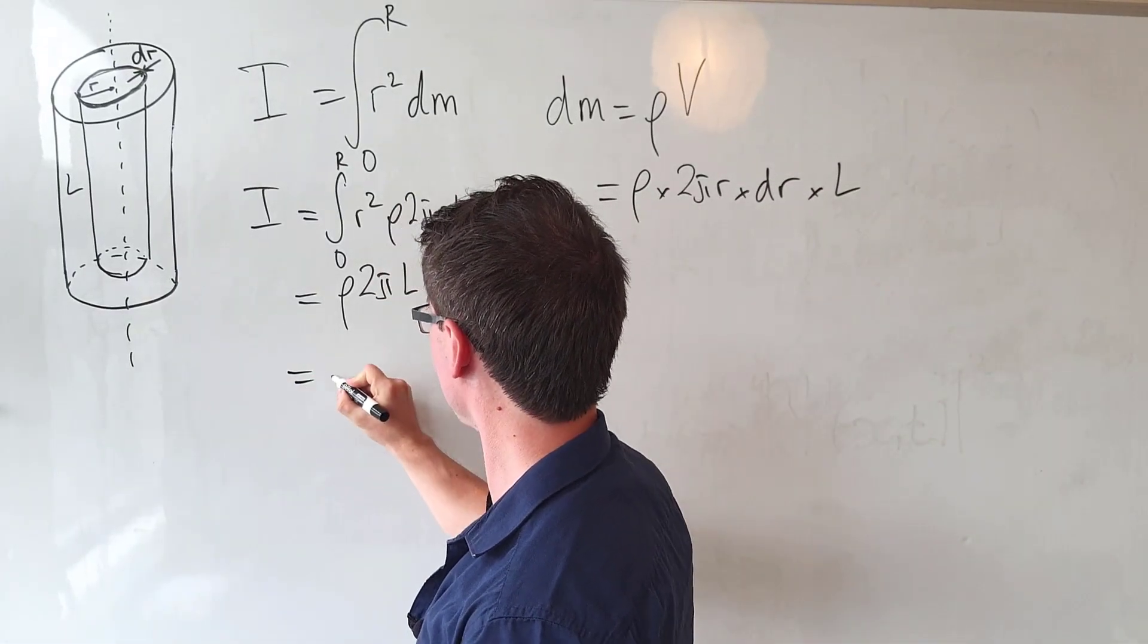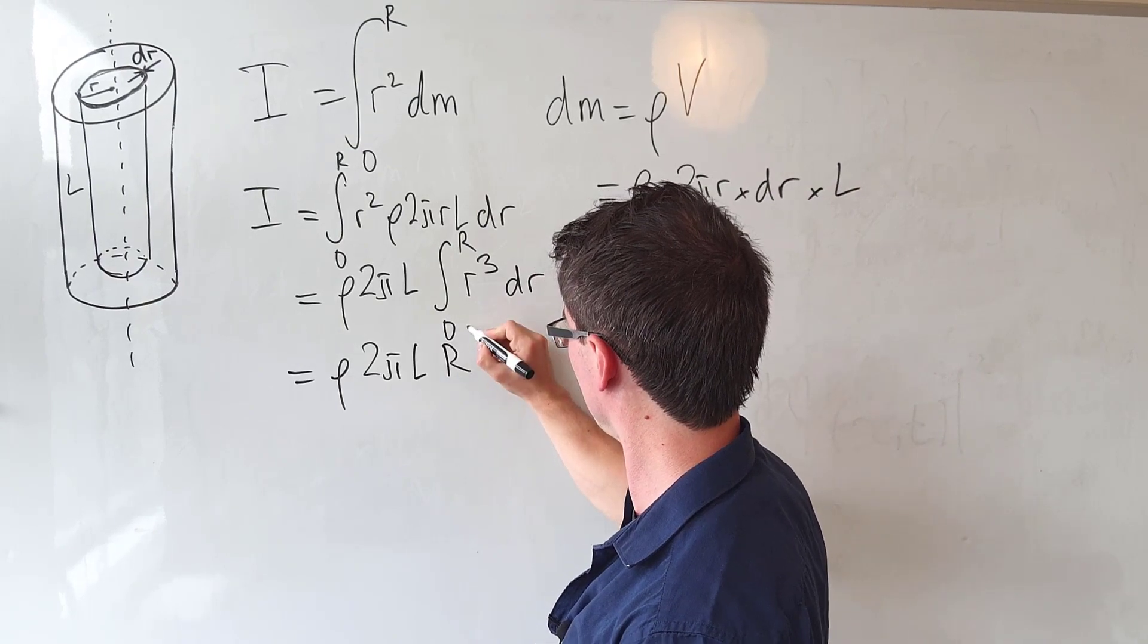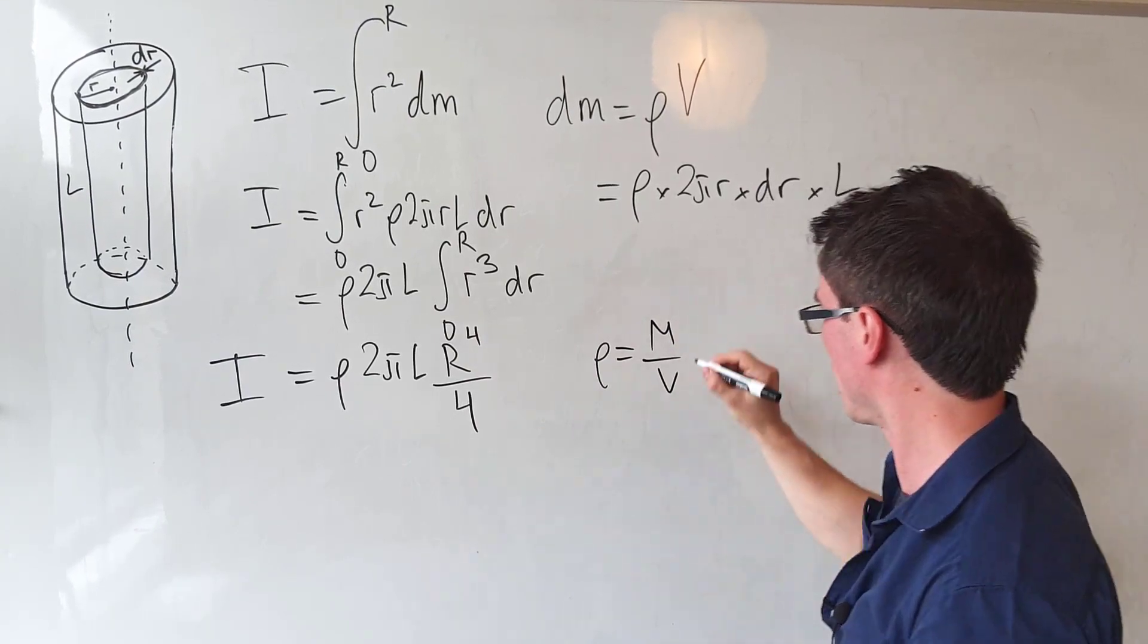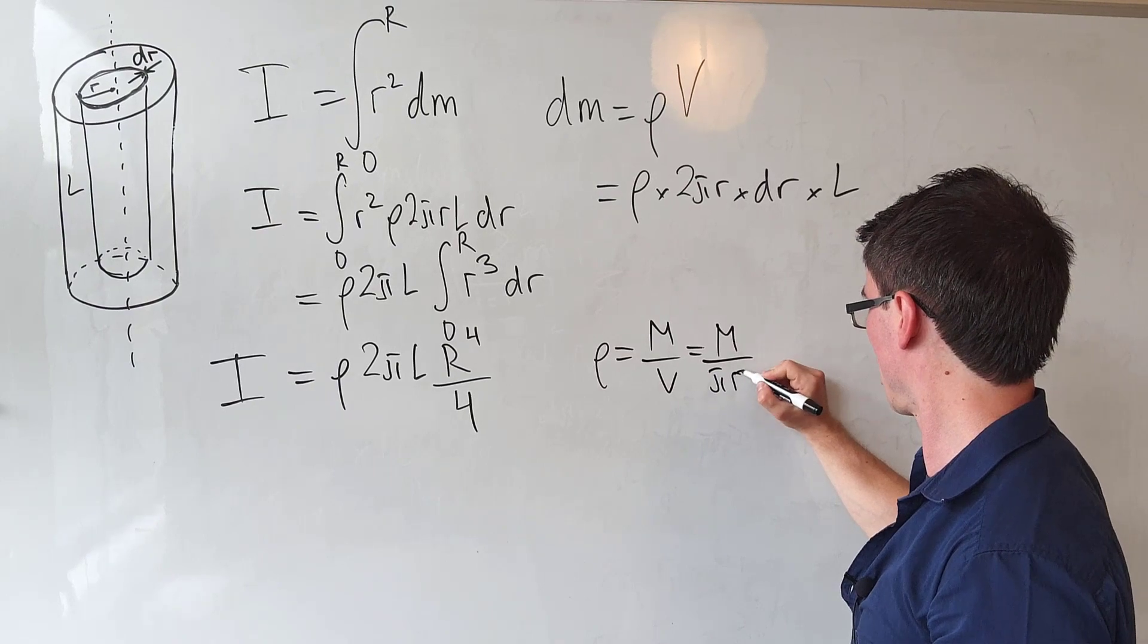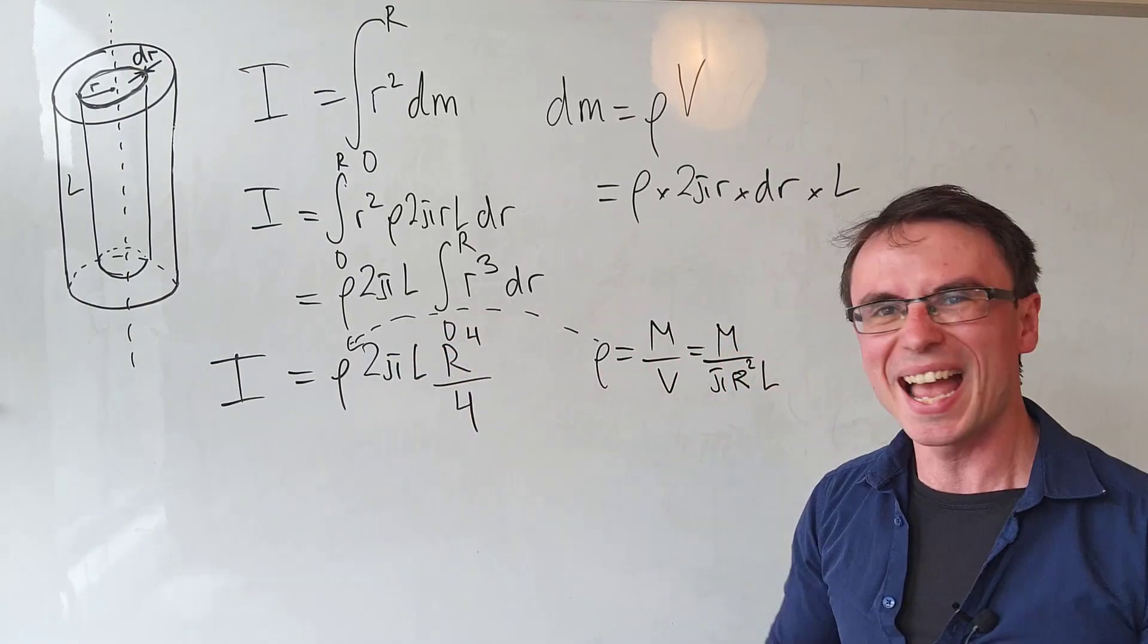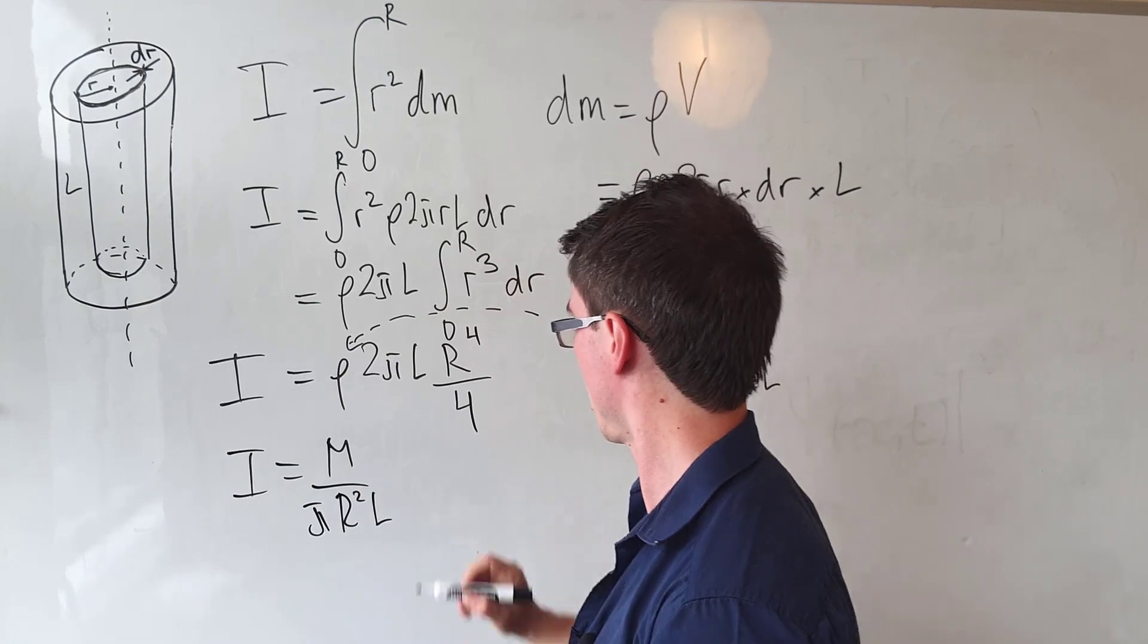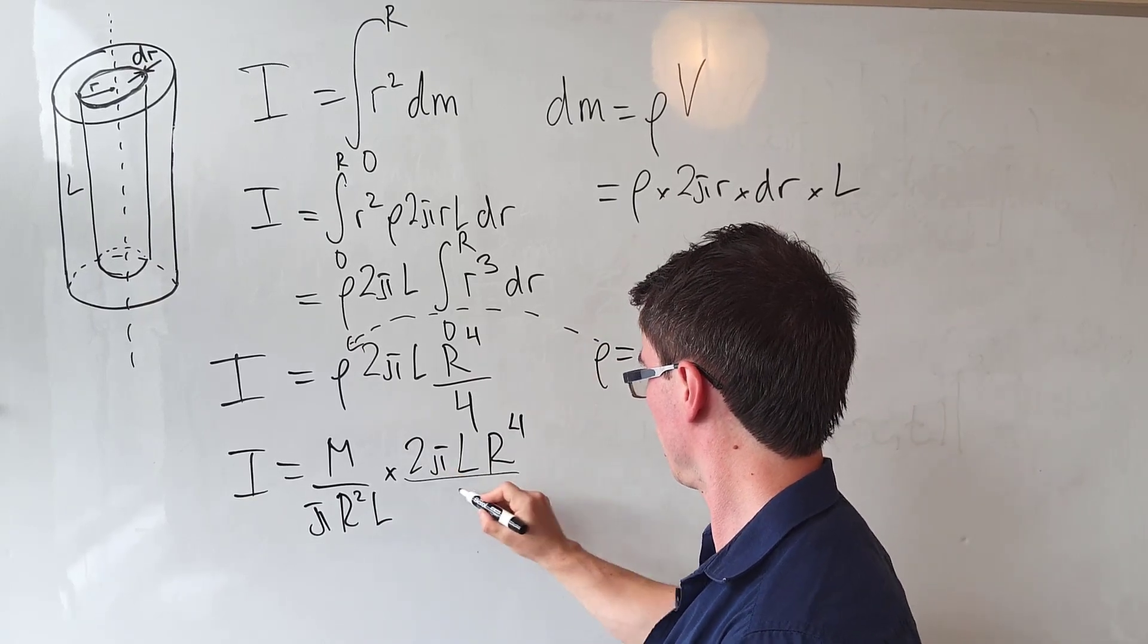Meaning that the moment of inertia will just be equal to rho times 2 pi multiplied by the length. Now this integral here will be equal to capital R to the power of 4 divided by 4. The moment of inertia is typically expressed in terms of the overall mass. The density is equal to the mass divided by the volume. So this is equal to m over the volume of a cylinder, which is going to equal pi r squared multiplied by l. So let's plug this expression into here and then simplify. And what we get is that I will be equal to m over pi r squared l, so it's going to be pi r squared l multiplied by 2 pi l r to the power of 4 divided by 4.